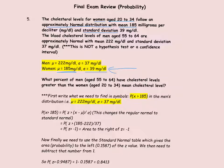The blood cholesterol levels for men in a certain age group is also given to us. The mean is 222 milligrams per deciliter and the standard deviation is 37 milligrams per deciliter. Write down the mean and the standard deviation clearly, and remember that it's the population mean mu and the population standard deviation sigma.